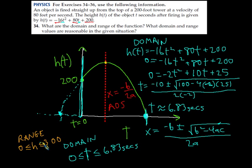And the range was h is between 0 and 300 feet. When the question is asked, what's the domain and range of this function? Well, this is how you figure it out. Figure out what the max or the min is, and then figure out what the x-intercepts are. And if you do that, you can figure out the range and the domain for this problem.